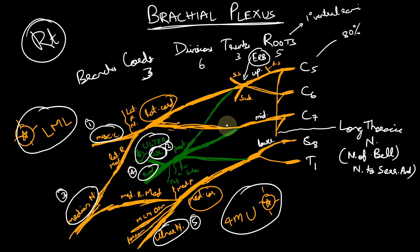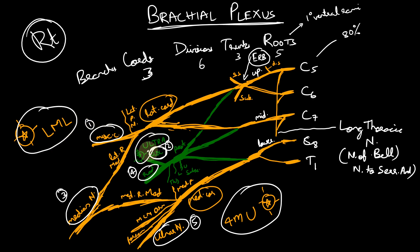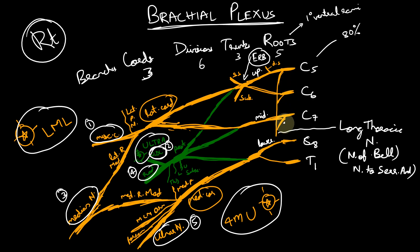To summarize: the main subdivisions of the brachial plexus are the roots, trunks, divisions, cords, and branches. For the branches, use three mnemonics — LML for the lateral cord, ULTRA for the posterior cord, and 4MU for the medial cord. From the upper trunk arise the suprascapular nerve and nerve to subclavius at Erb's point; from C5 comes the dorsal scapular nerve; and from C5, C6, C7 comes the long thoracic nerve — the nerve of Bell.